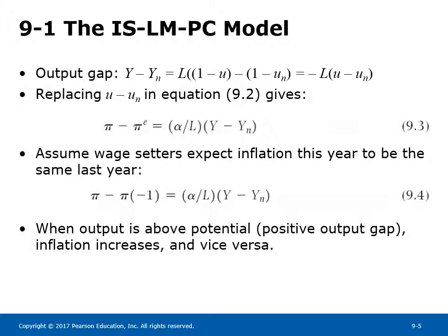Equation 9.3 restates the Phillips curve as a relation between change in inflation and the output gap. Assuming wage setters expect inflation this year, pi, to be the same as last year, pi minus 1, equation 9.4 says: when output is above potential — a positive output gap — inflation increases, and vice versa.